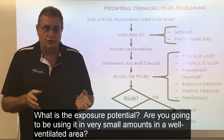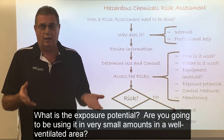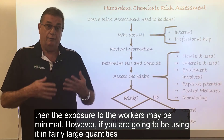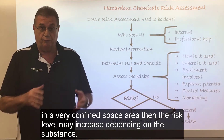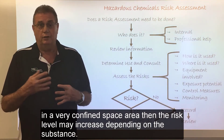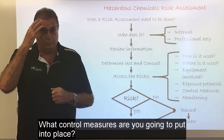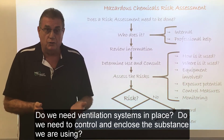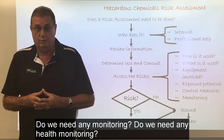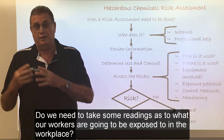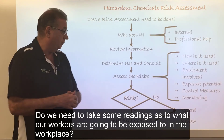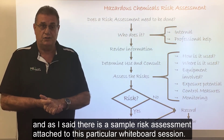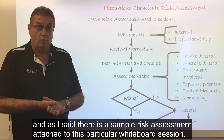What is the exposure potential? Are you going to be using it in very small amounts in a well-ventilated area? Then the exposure to workers may be minimal. However, if you're going to be using it in fairly large quantities in a very confined space, the risk level may increase depending on the substance. What control measures are you going to put in place? Do we need ventilation systems, enclosure of the substance, air monitoring, or health monitoring of workers? All of those things will be addressed when you do your risk assessment, and there is a sample risk assessment attached to this whiteboard session.